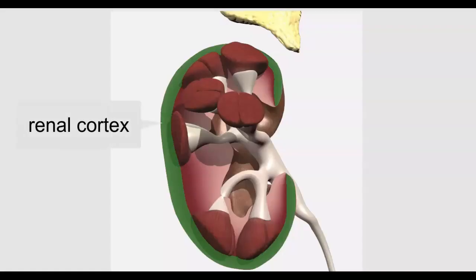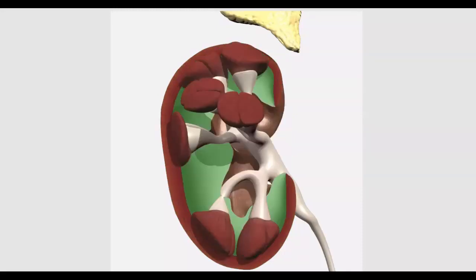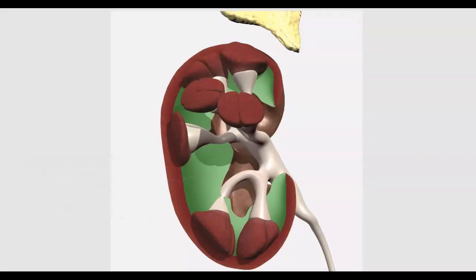Let's take a look at the major regions of the kidney. The renal cortex, highlighted green here, is where the nephrons are located. Nephrons are microscopic, so we don't see them here. Deep to the renal cortex is the renal medulla, which contains two major structures: the renal columns, highlighted green, and the renal pyramids in burgundy.